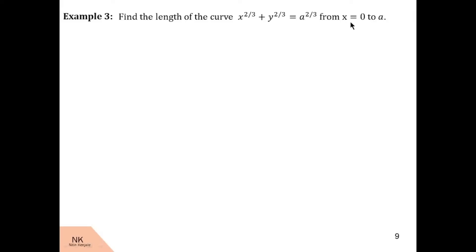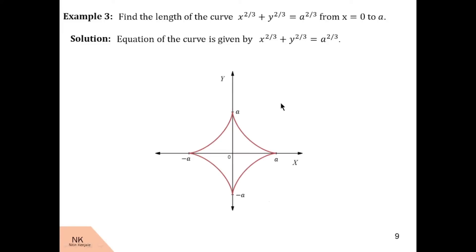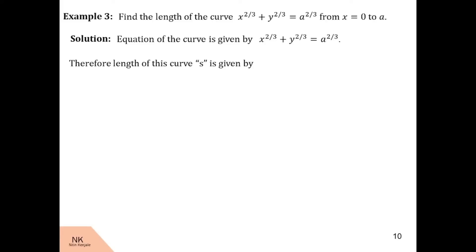Here we are asked to find the length of the curve given by x^(2/3) + y^(2/3) = a^(2/3) from x = 0 to x = a, where a is a parameter or constant. We note down the equation of the curve whose length we want to find. This equation is the equation of an astroid. Let s be the length of the curve; then s is given by this formula, with x1 = 0 and x2 = a.